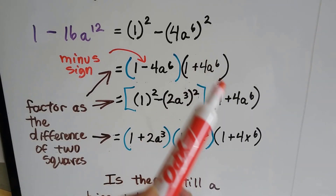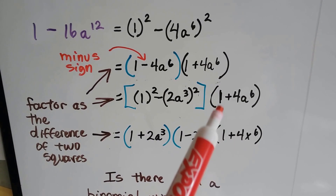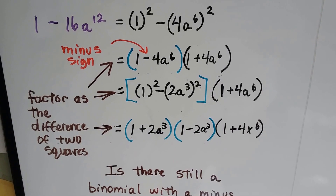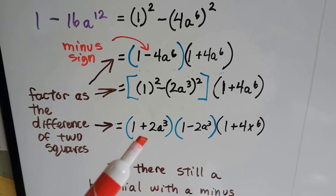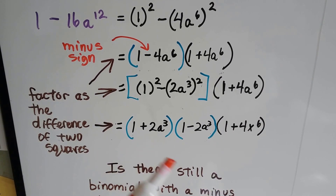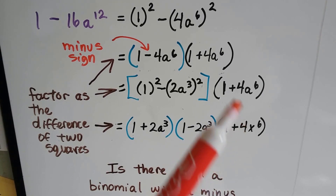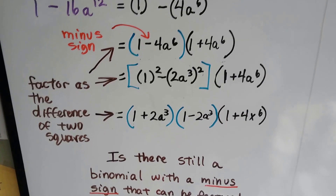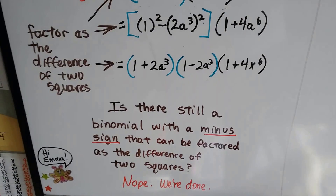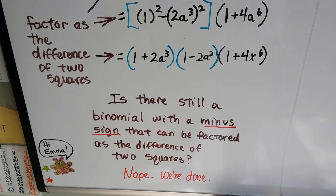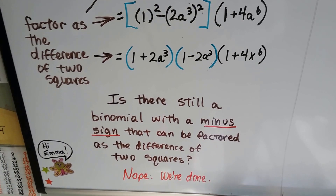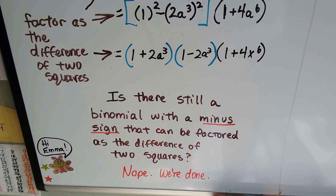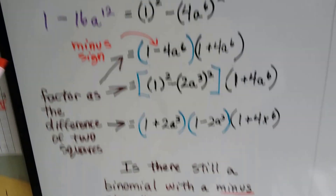This guy just kind of comes along for the ride, because he's got a plus sign, so he can't be the difference. When we do this one, we end up with 1 plus 2a to the 3rd, 1 minus 2a to the 3rd, and then we drop down this guy. We ask ourselves: is there still a binomial with a minus sign that can be factored as a difference of two squares? There's the one with the minus sign — nope, we can't factor that anymore. So we're done.